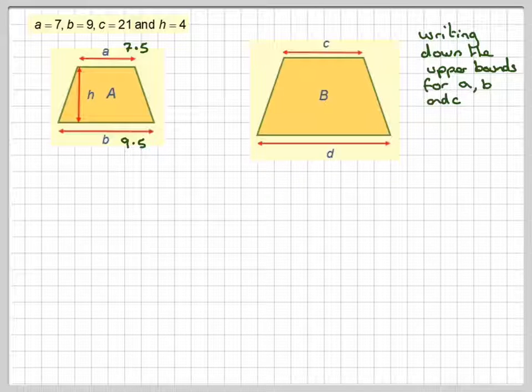The upper bound of B will be 9.5, these are rounded off to the nearest whole number, and the upper bound of C will be 21.5.